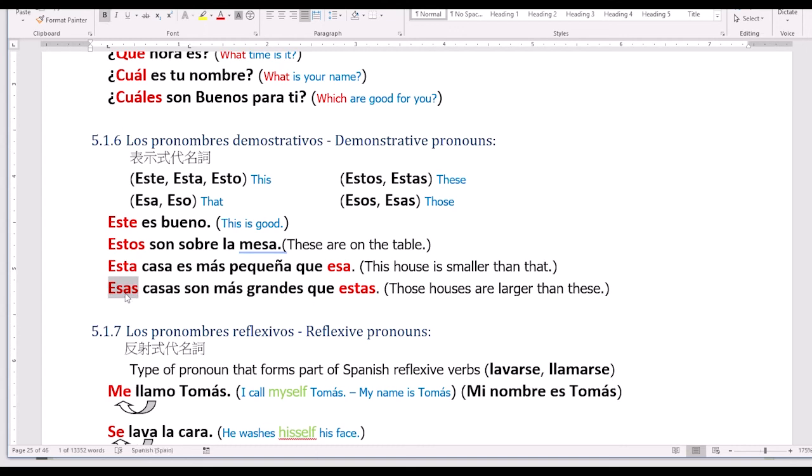For the plural form use: Esas casas son más grandes que estas. Those houses are larger than this. So you are using the plural form here. This is those, so you're using esas. But the house is a feminine noun, so you're using esas, not esos. This pronoun referred to this feminine noun, so you have to use the feminine form of the pronoun.